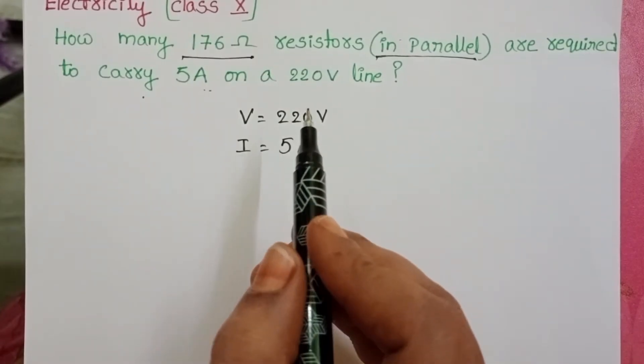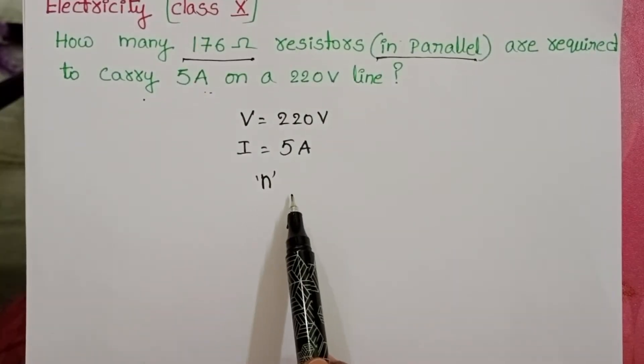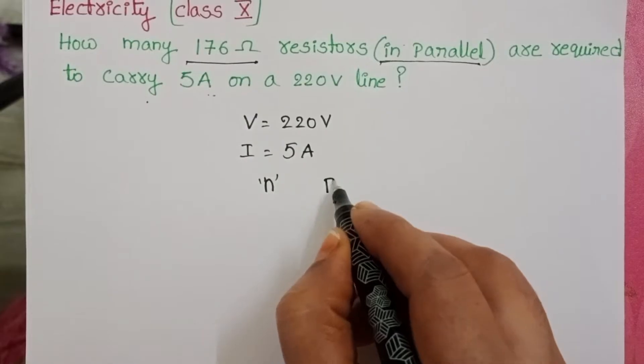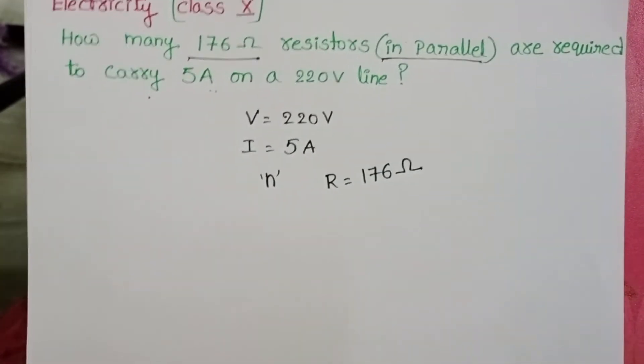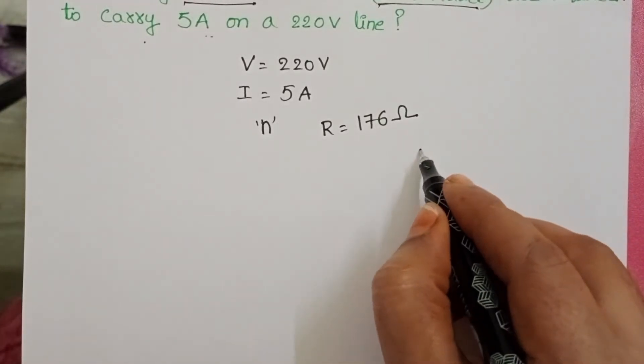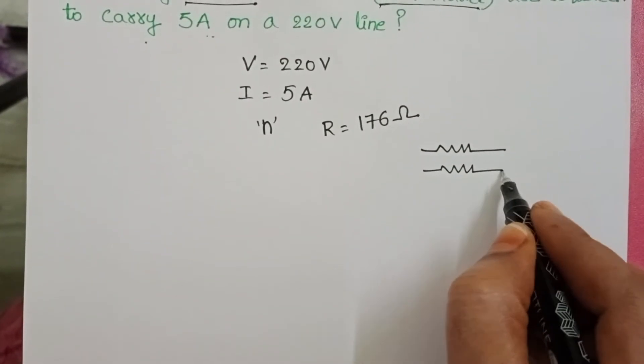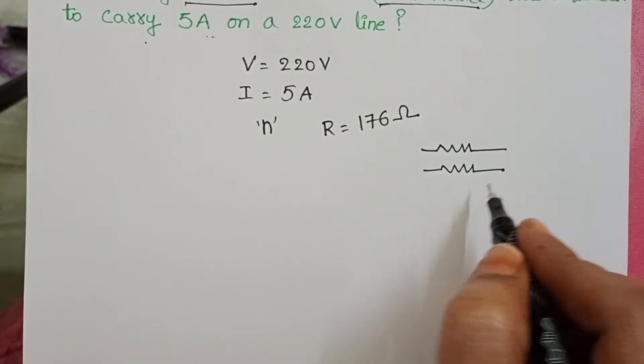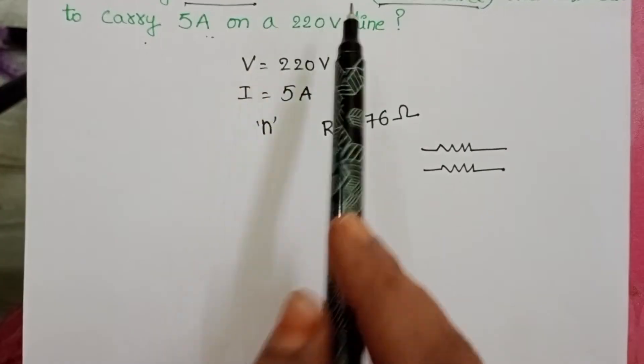We don't know the number of resistors. Let it be N. All the resistors are identical, each resistor of resistance is 176 ohms. These resistors are connected in parallel. How many resistors are required to connect in parallel to get 5 amperes of current in the circuit?